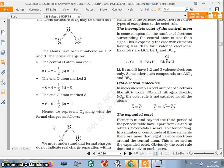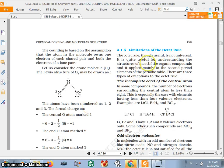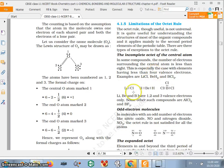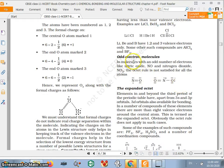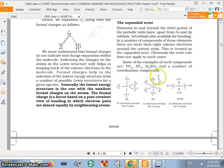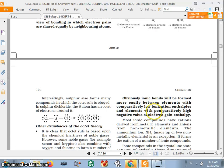Now friends, what are the limitations of octet rule? You can see here incomplete octet of the central atom like BH2, BCl3, odd electron molecules like NO, NO2, the expanded octet examples PF5, SF6, H2SO4.